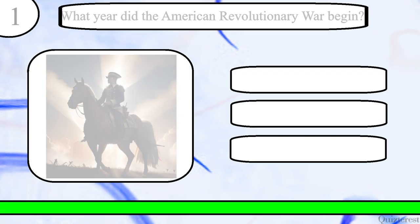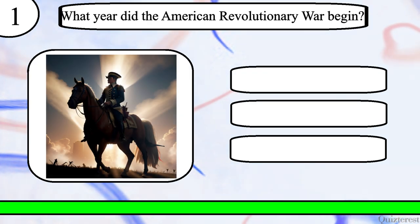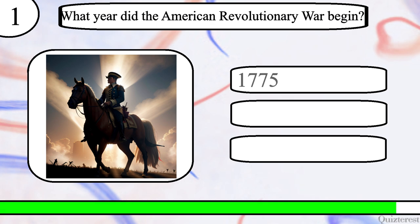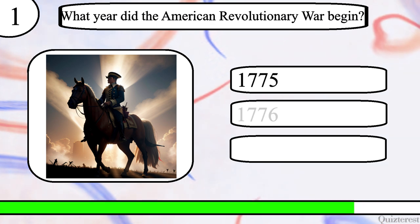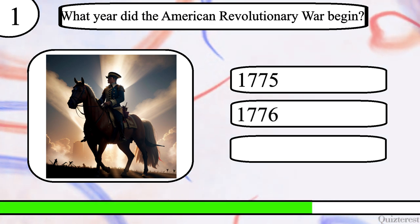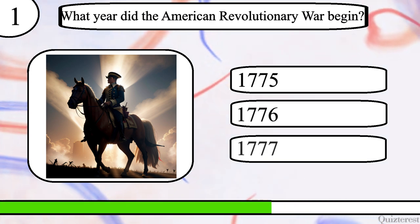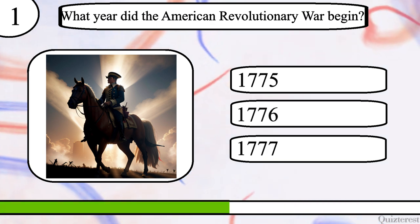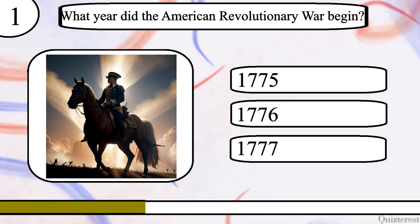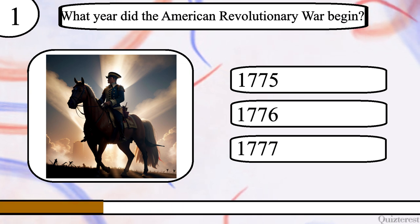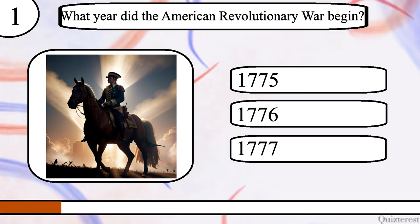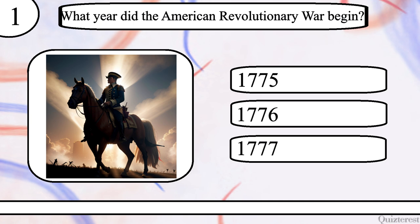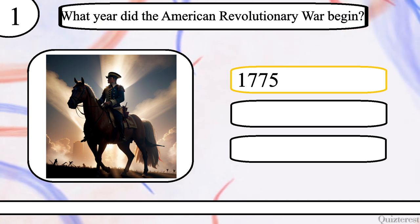Question 1. What year did the American Revolutionary War begin? 1775, 1776, or 1777? The correct answer is 1775.